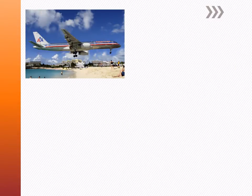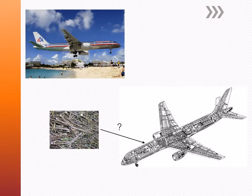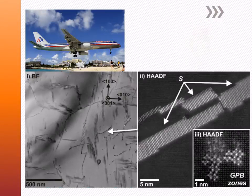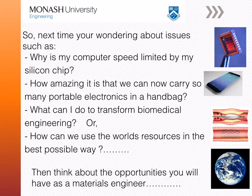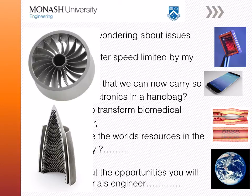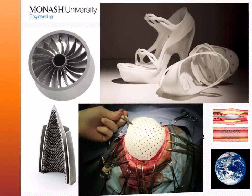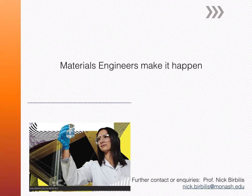So next time you see an engineered product, think of what it's actually made of. Is it made out of twigs? Is it made out of Vegemite? It's actually made from a very carefully designed nanostructure down to the atomic scale, giving the right combination of strength and toughness. If you've ever wondered why your computer speed is limited by a silicon chip, or how amazing it is that we can carry so many portable electronics in a handbag, or what you can do to transform biomedical engineering, or how we can use the world's resources in the best possible way — then think about the opportunities you will have as a materials engineer. You can transform the way industry produces things like jet engines, or you can 3D print your favourite shoes, or even 3D print a scalp repair. Materials engineers make it happen.